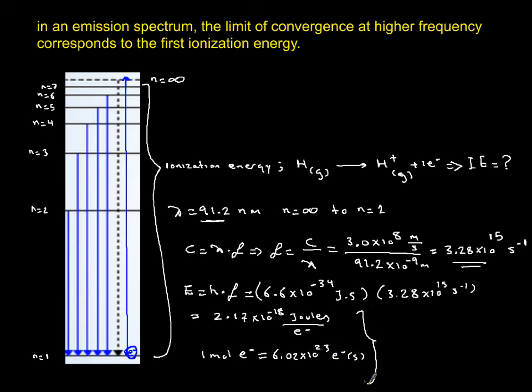So all I need to do is multiply these two quantities by each other: times 6.02 × 10^23. At the end I will divide by 1000 to have it in kilojoules.